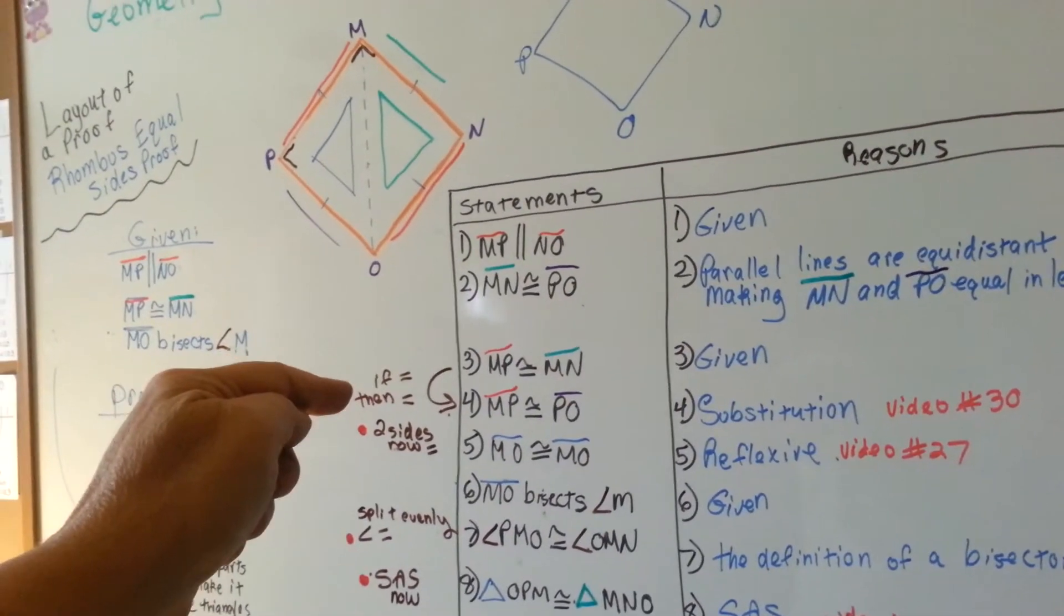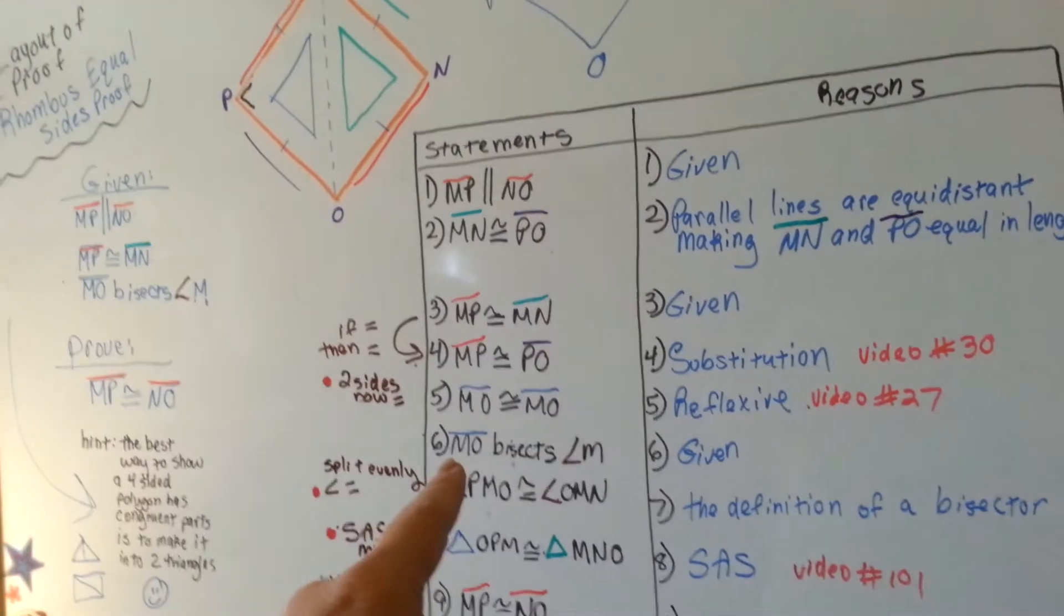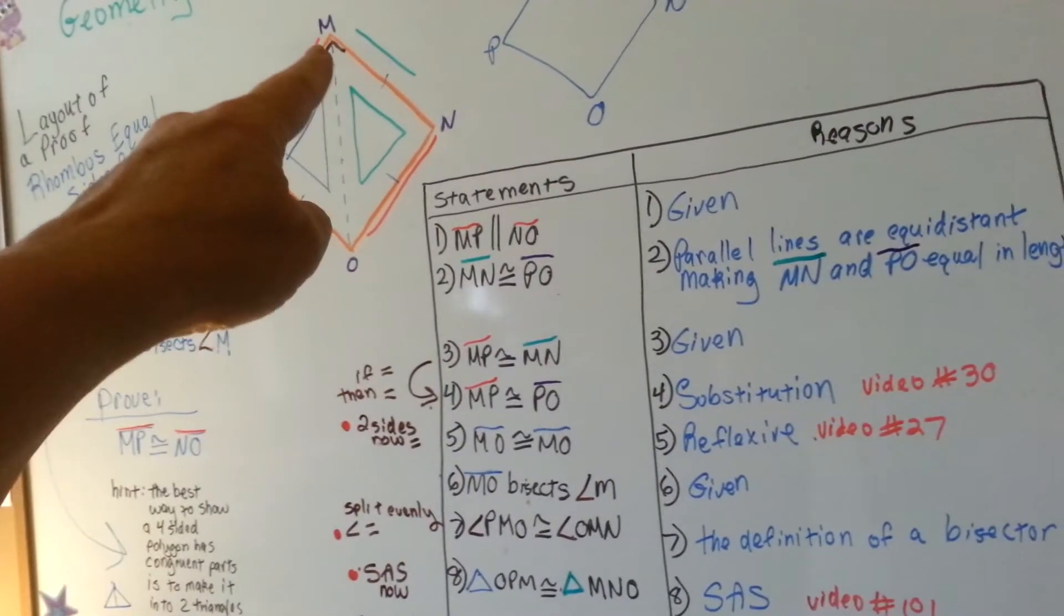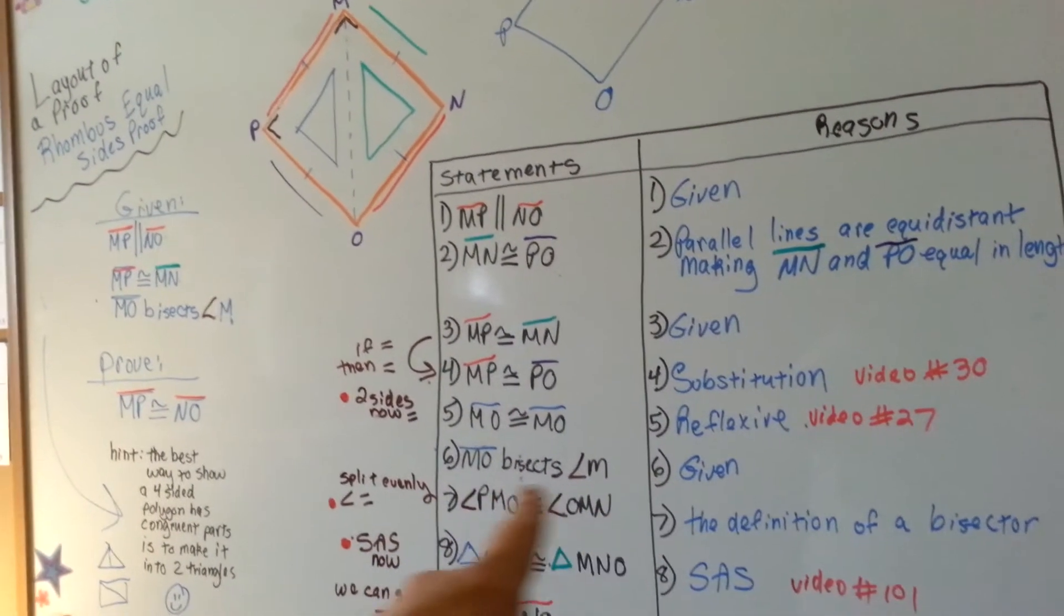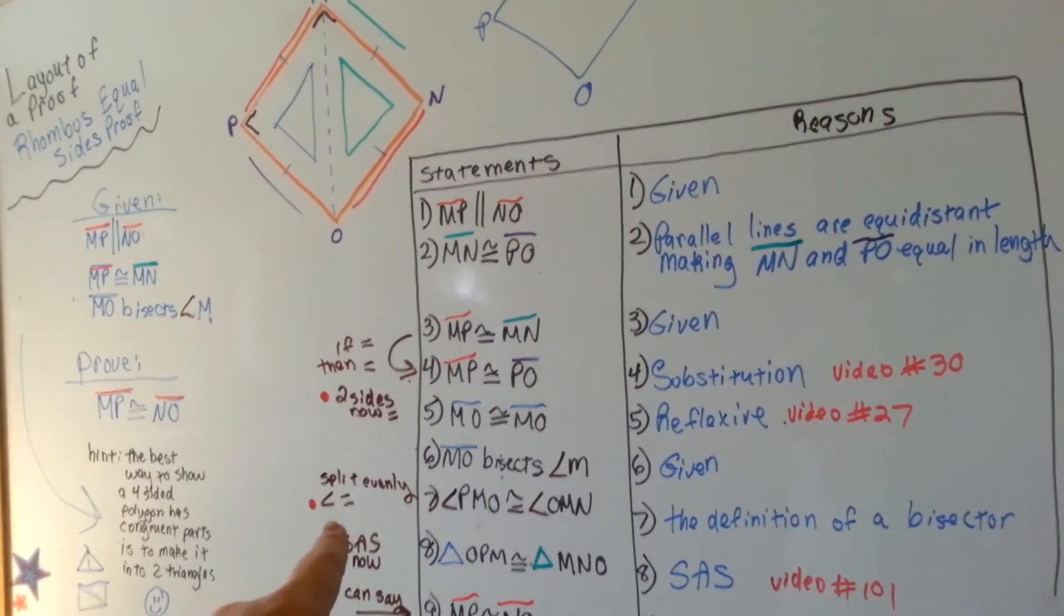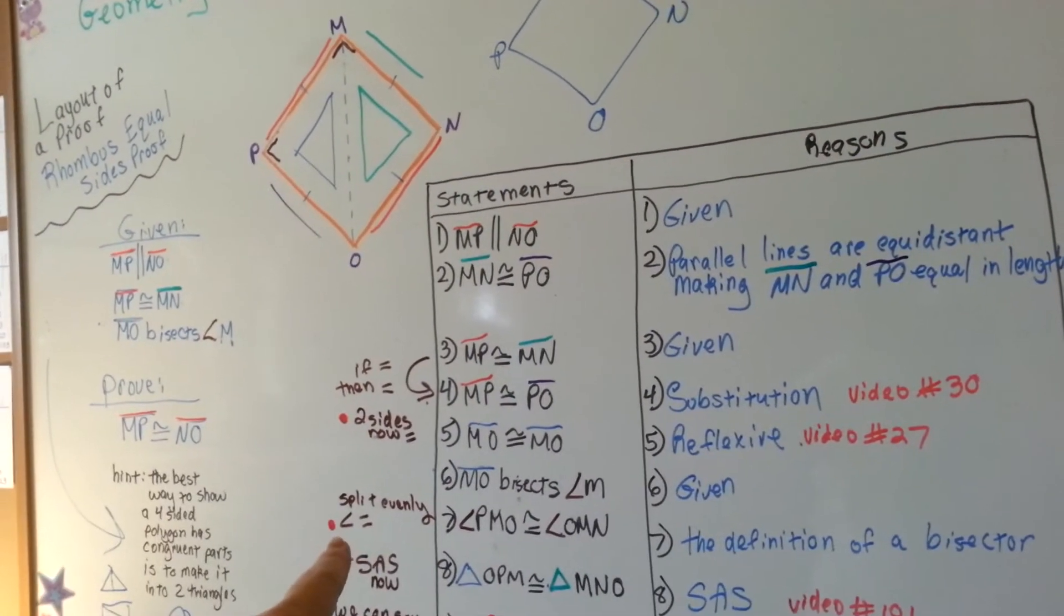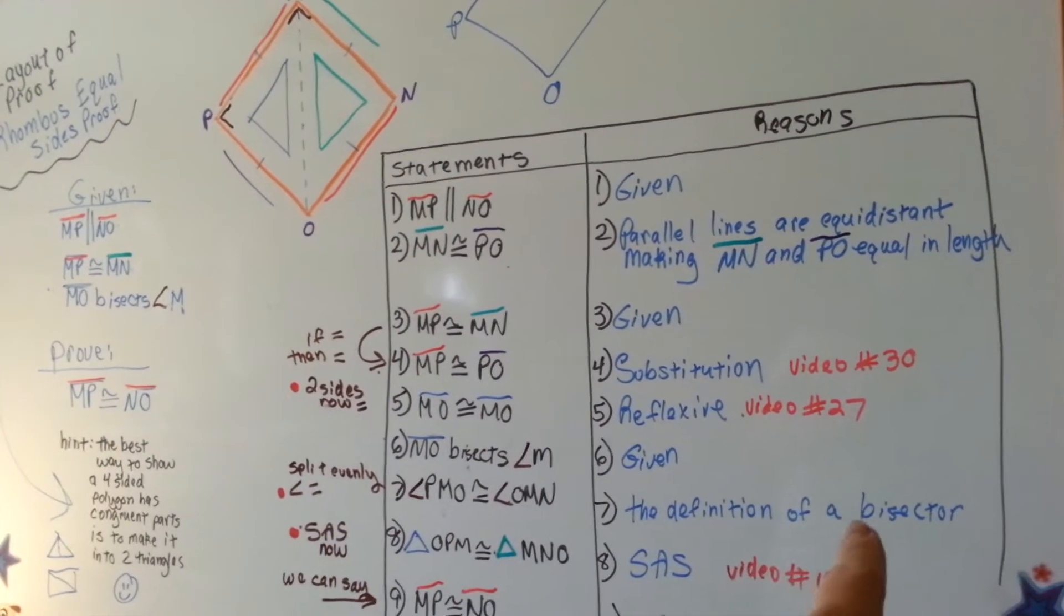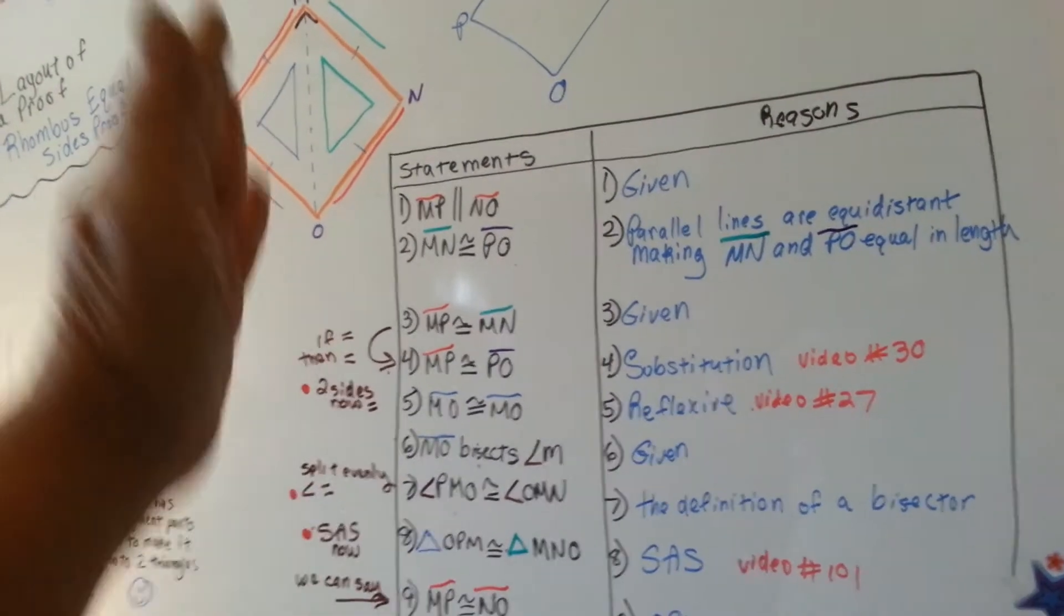So now we have two sides that are congruent. And we're going to say that because MO bisects angle M, which is given, that it splits the angle evenly. So we've got two sides and an angle that are now congruent because the definition of a bisector is that it splits it evenly.